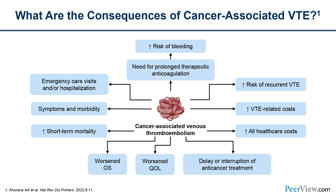Cancer-associated VTE has several consequences for people with cancer. Once a blood clot occurs, there's a need for prolonged therapeutic anticoagulation — at least six months and in many patients indefinitely as long as cancer is active. Therapeutic anticoagulation is associated with an increased risk of bleeding. The occurrence of one VTE is strongly associated with the risk of a second VTE. There are also costs associated with treatment, delays or interruptions to anticancer therapy, worsened overall survival, increased short-term mortality, increased symptom and morbidity burdens, and increased emergency room visits and hospitalizations.